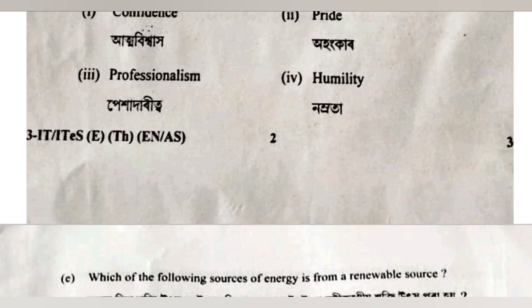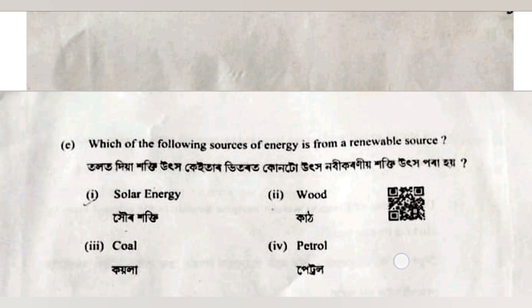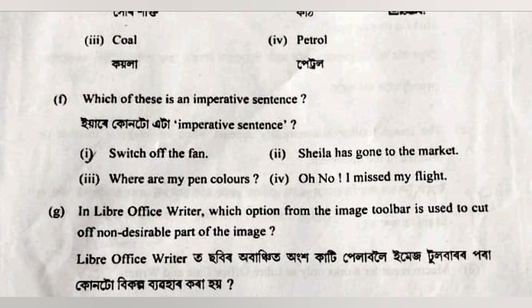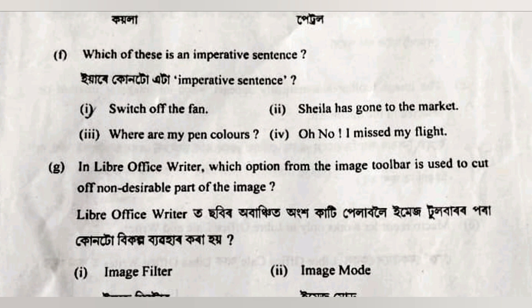Next, question number E: which of the following sources of energy is from a renewable source? Of course, it will be solar energy — the rest are non-renewable. Number F: which of this is an imperative sentence? I am not that good in grammar, so I am skipping this question.